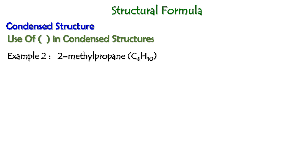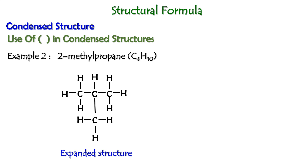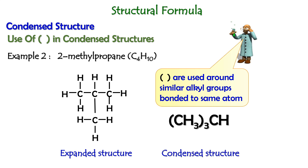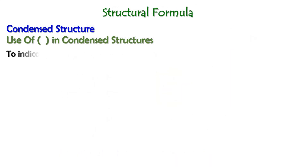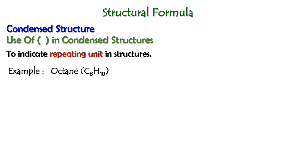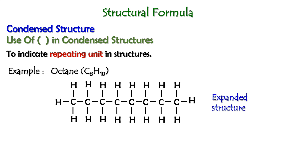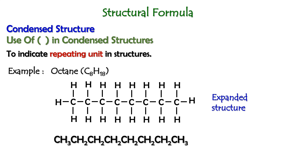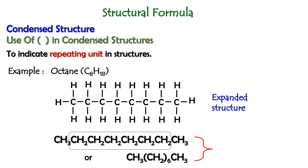The next example is 2-methylpropane — this is the expanded structure of the molecule. The condensed structure can be written like this, using the bracket symbol to represent the alkyl group bonded at the same carbon. The bracket symbol can also indicate the repeating unit in a structure. For example, if we have octane with formula C8H18, the condensed structure can be written using the repeating unit CH2 in brackets. Both representations are known as the condensed structure of the molecule.